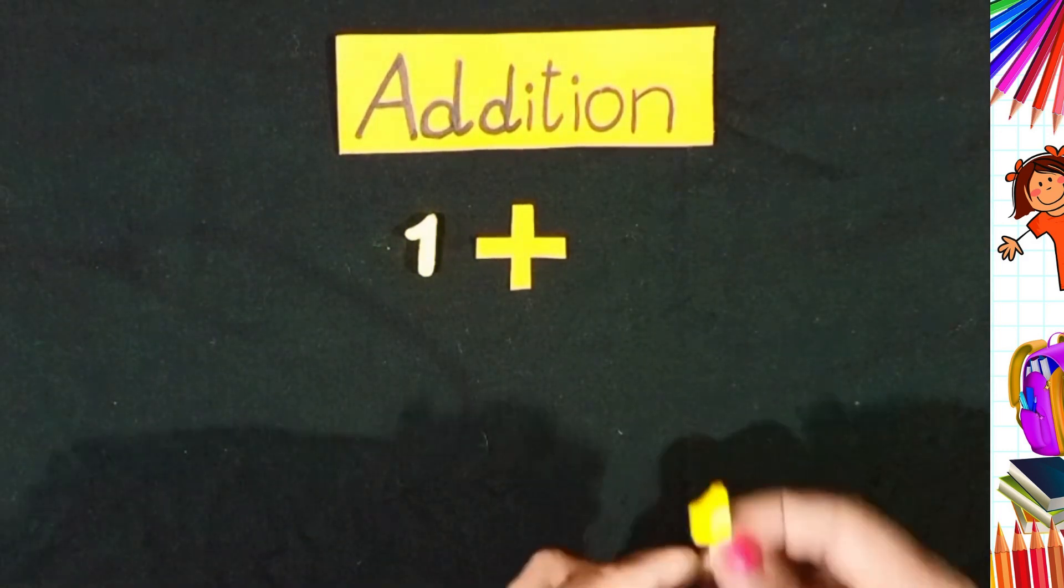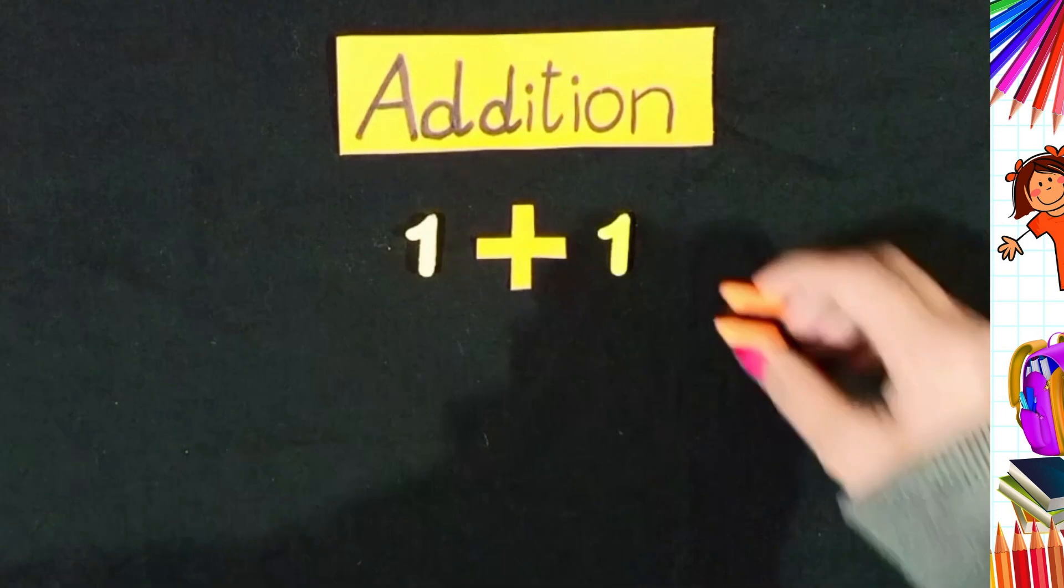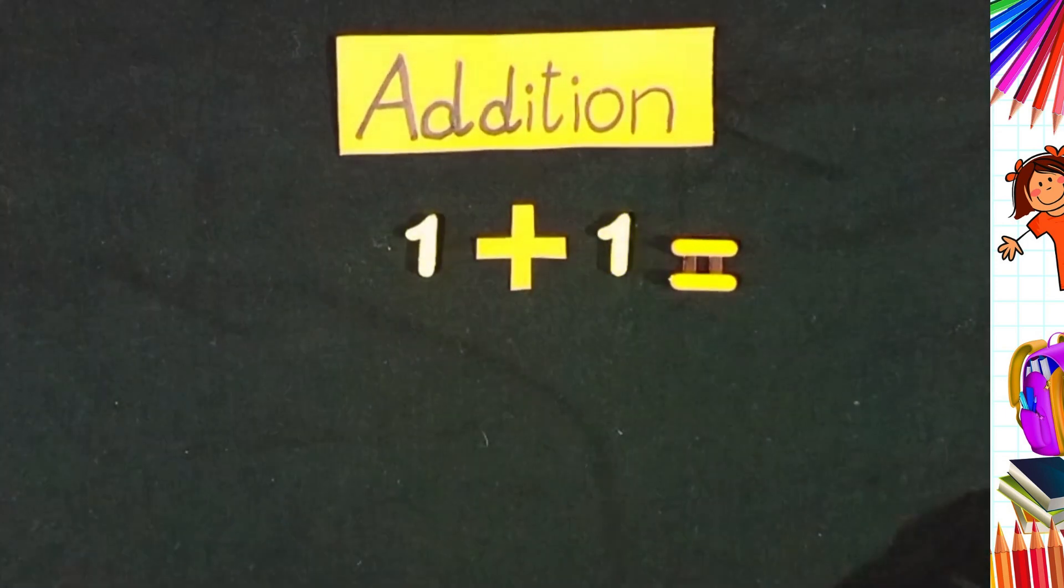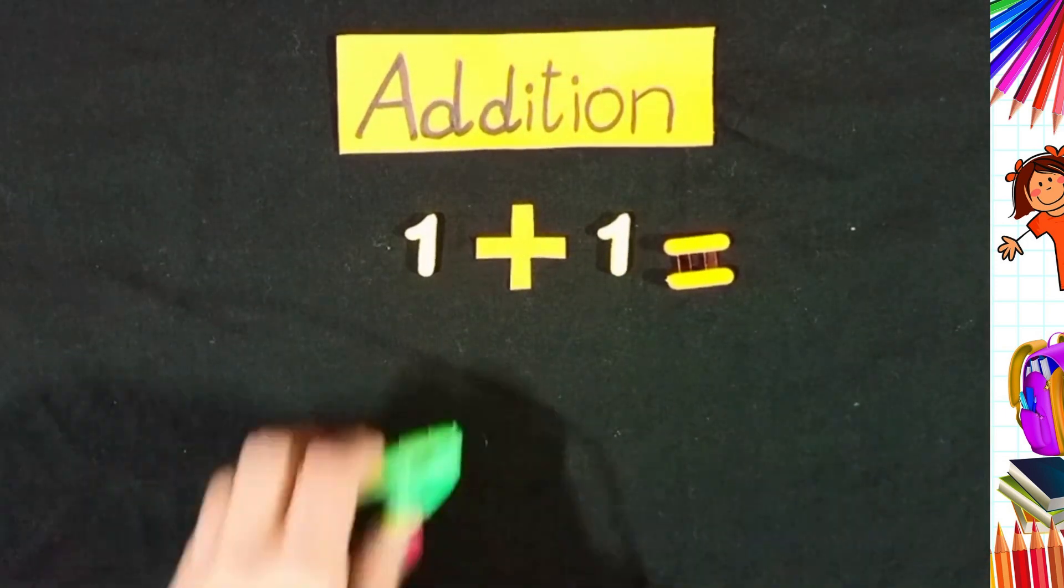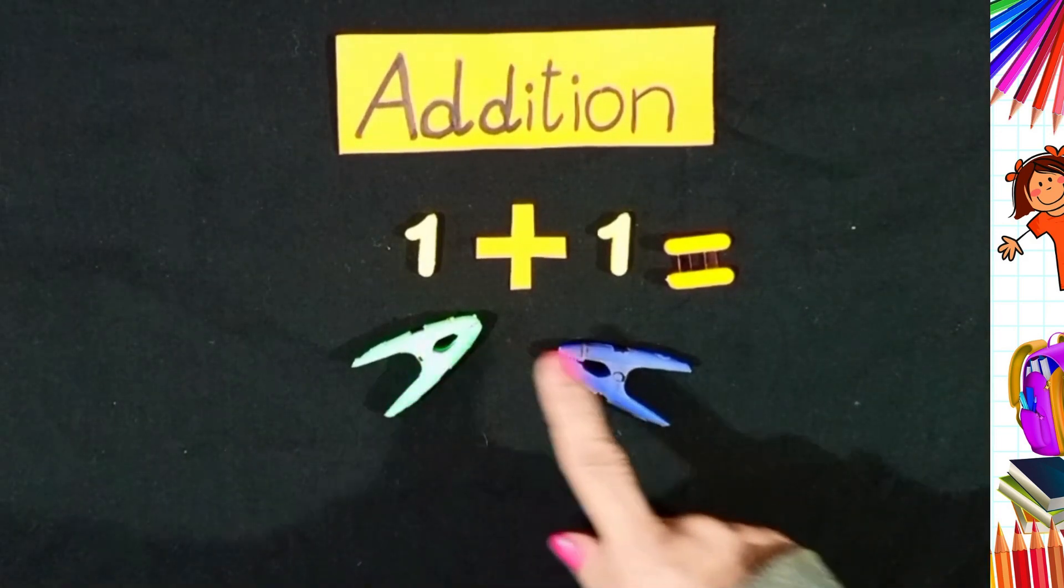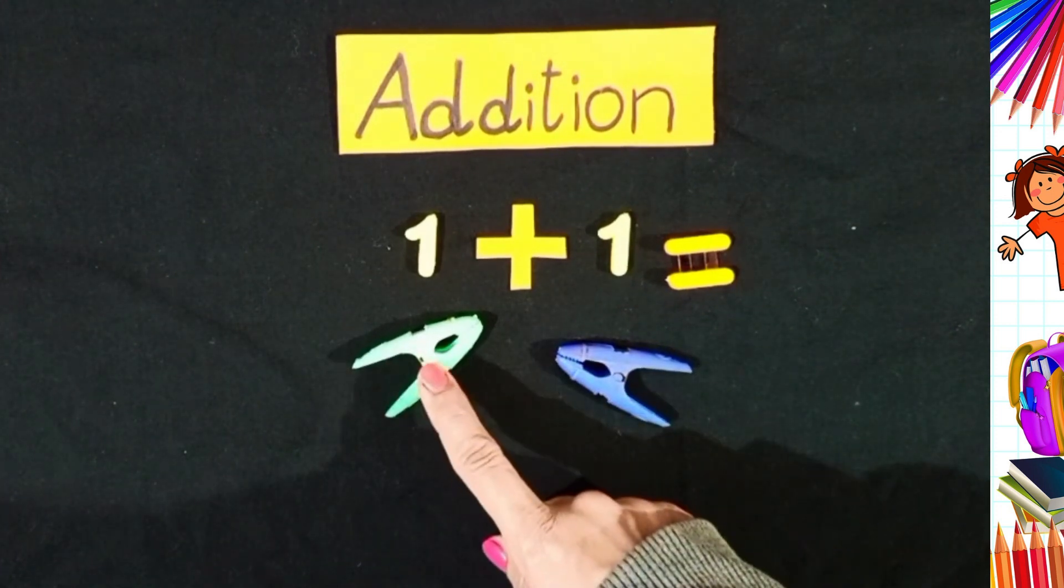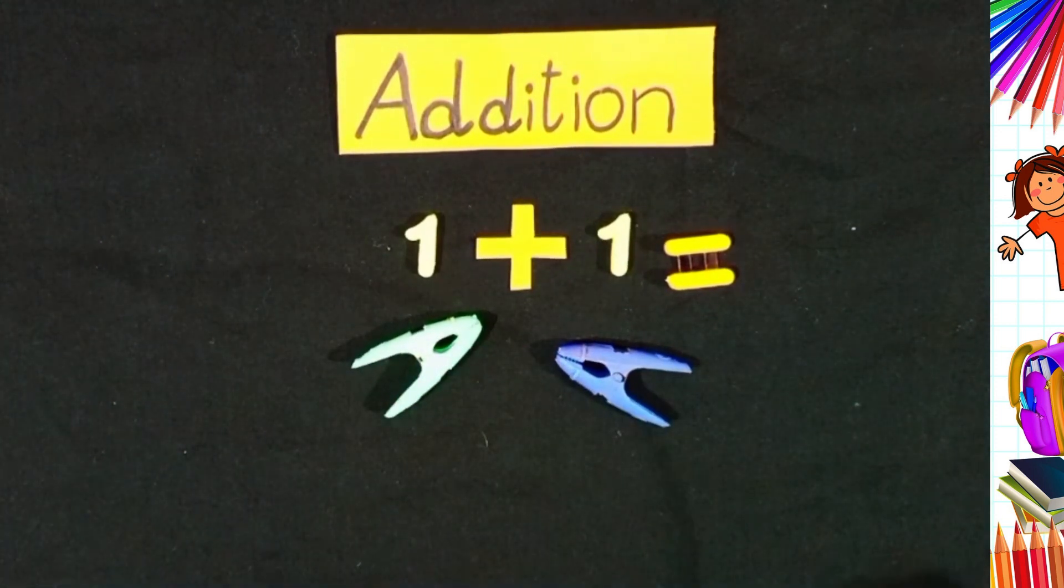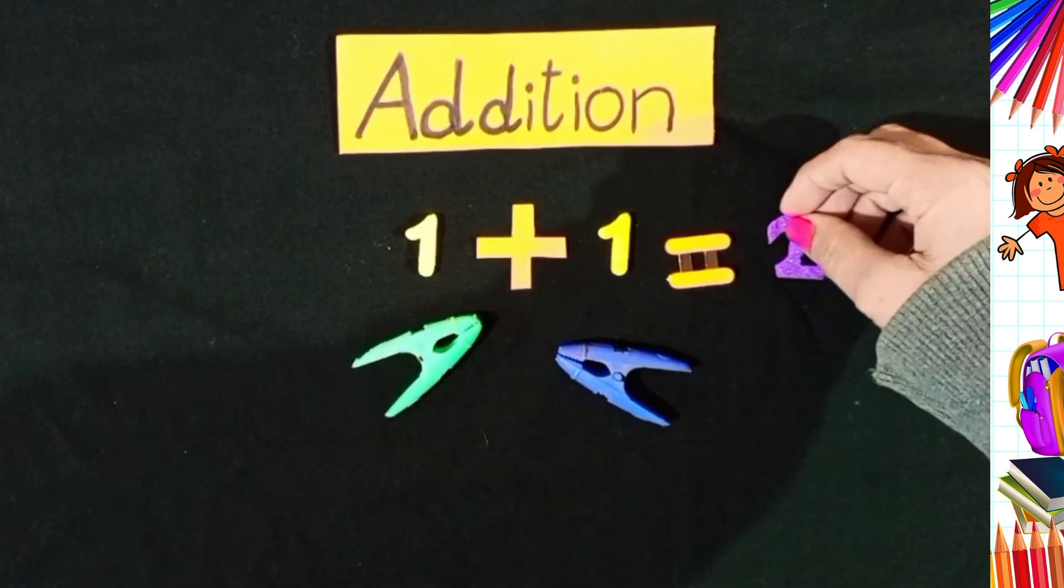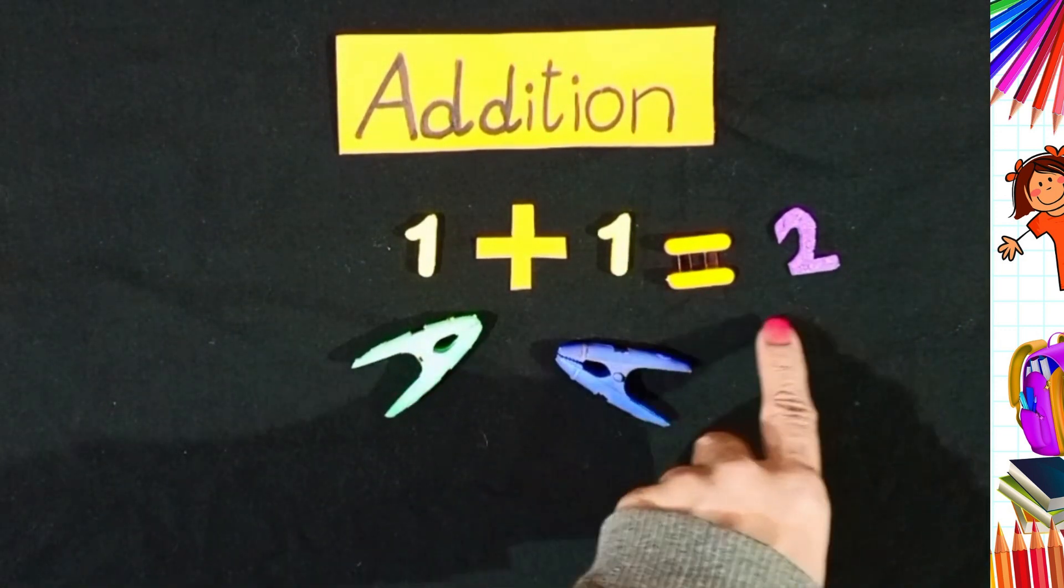1 plus 1 equals to what? 1 plus 1 equals to 1, 2. Combine them together, we get 1, 2. The answer is 2. 1 plus 1 equals to 2.